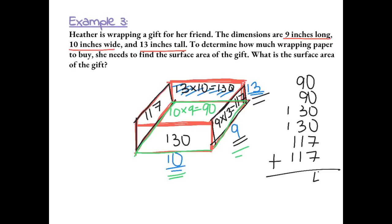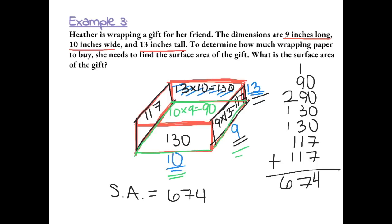Adding the ones: 7 plus 7 gives us 14. Then 9 plus 1 is 10, and 9 plus 1 is another 10, so that's 20. 20 plus 3 is 23, plus 3 more is 26, plus 1 more is 27. Then 2 plus 1, 2, 3, 4, which gives us 674. So our surface area is 674 inches squared.